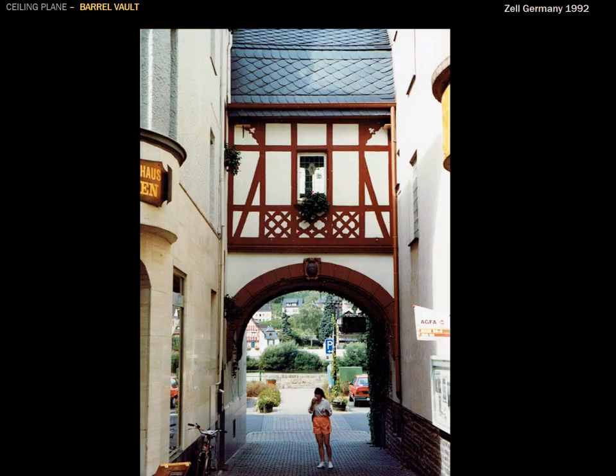A picture of my wife in Paris in 1992, when I took her for her birthday, then visited my uncle in Belgium. This is in Zell on the Moselle River, a tributary to the Rhine, with the Berg Eltz castle nearby. The Moselle Valley is beautiful, with vineyards on the steep hills on either side of the river.